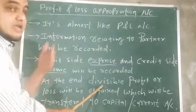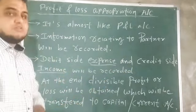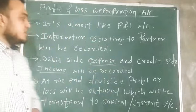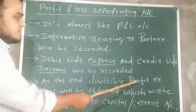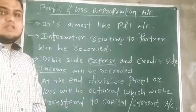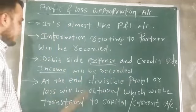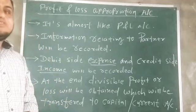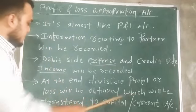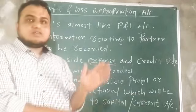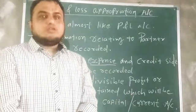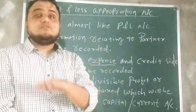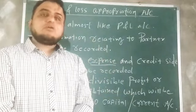At the end of the account when you do the total: if the credit side total is more, it will be considered as divisible profit. If the debit side total is more, it will be considered as divisible loss.